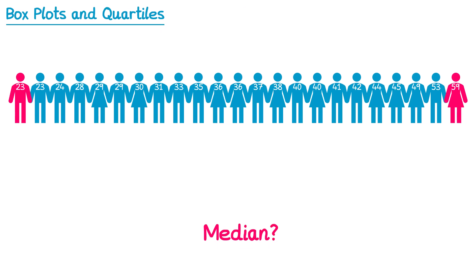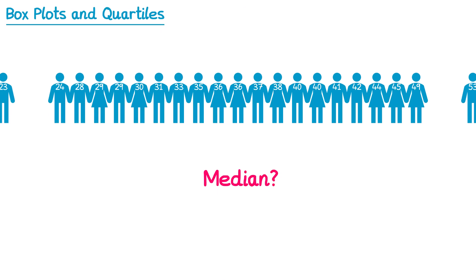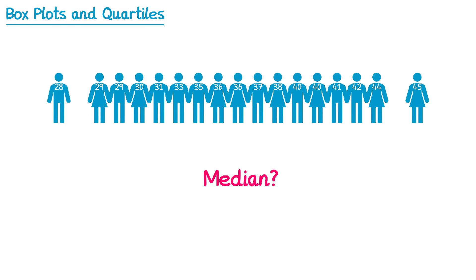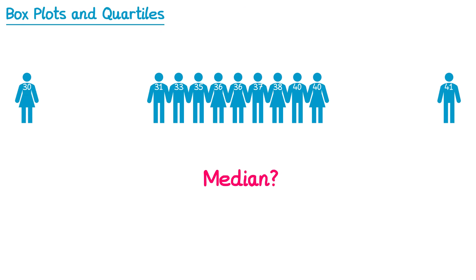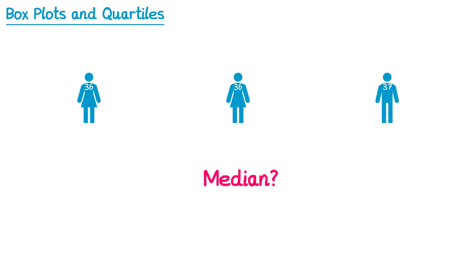Which person would be the median? The median is the age of the person that's in the middle. You probably already know how to find the median value by removing the least and greatest value in pairs like this, until we're left with the person that's in the middle. This person's age would be the median age of 36 years.